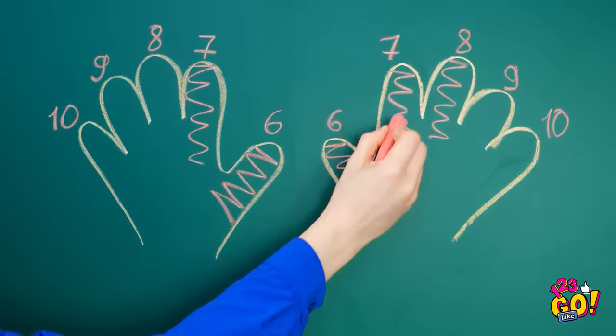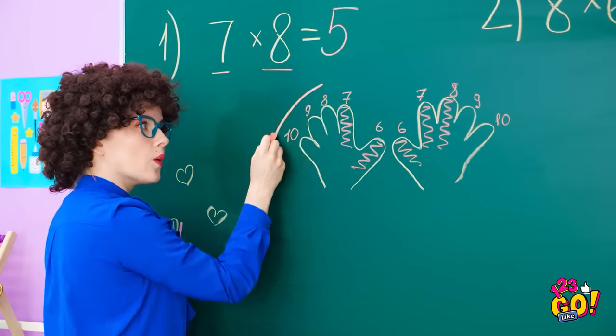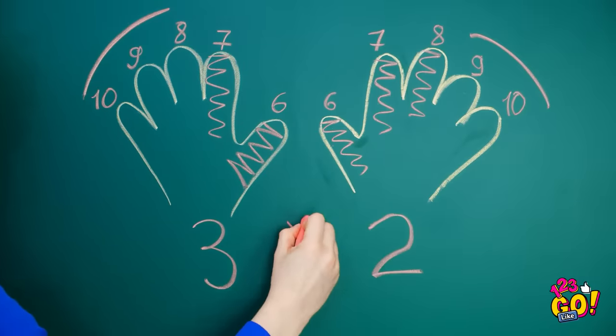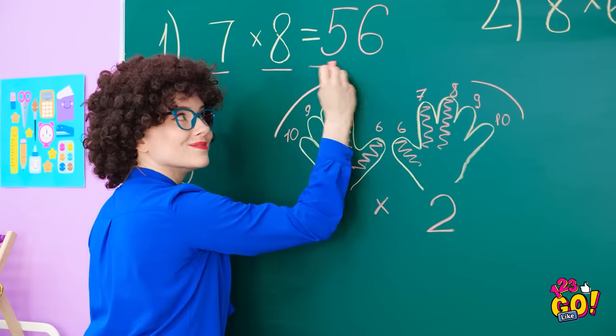We've got five fingers total. So, we write the five up here. And then what about the fingers that are remaining? Three on this hand and two on this one. Multiply those together and we get six! And that's the answer!